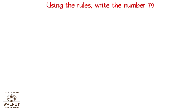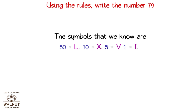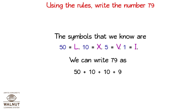Using the rules, write the number 79. The symbols that we know are: 50 is L, 10 is X, 5 is V and 1 is I. We can write 79 as 50 plus 10 plus 10 plus 9. That gives us L, X, X and I followed by X. That is our answer.